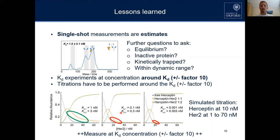With a 10-fold stronger KD, you can see the curve falls down much quicker, and you can immediately distinguish them. But what is really difficult is to distinguish that case from an even 100 times stronger interaction, because you need very high sensitivity and precision in that range. Preferably always perform the KD experiment at concentrations around the KD.